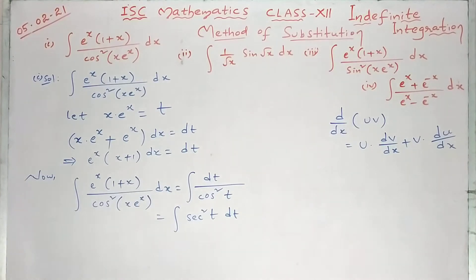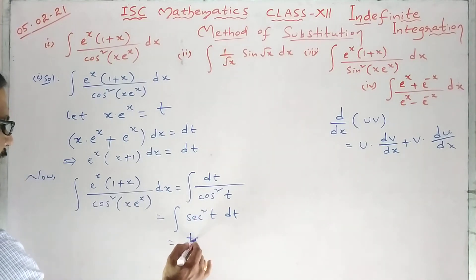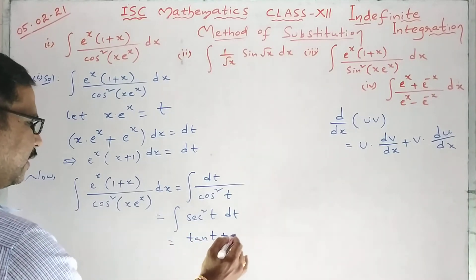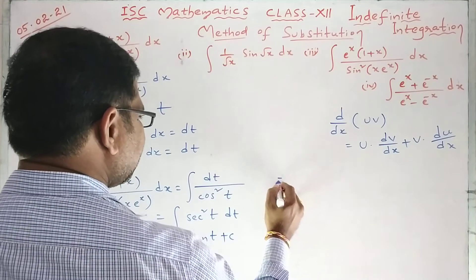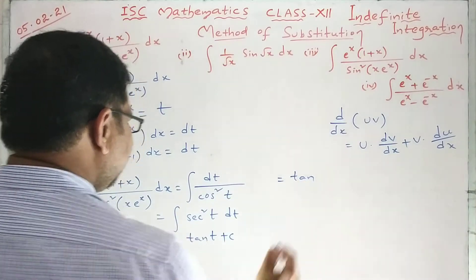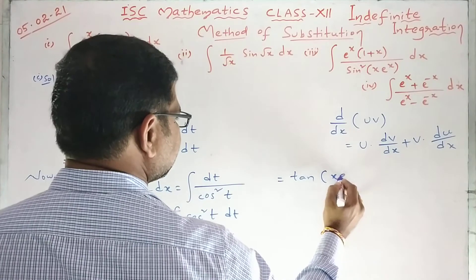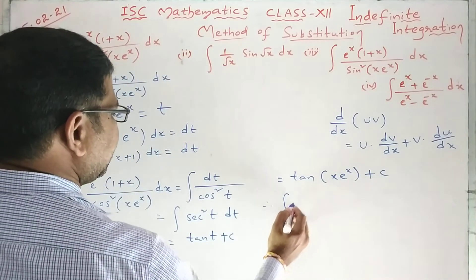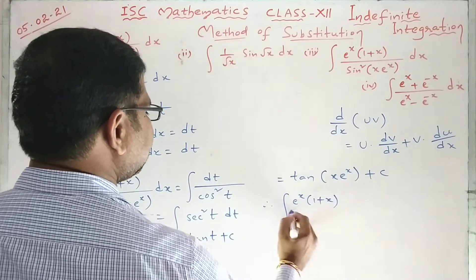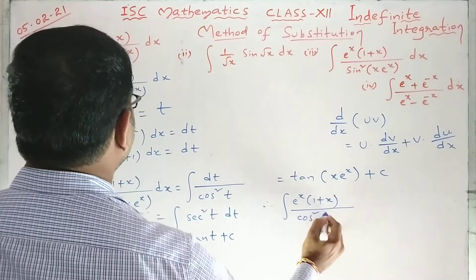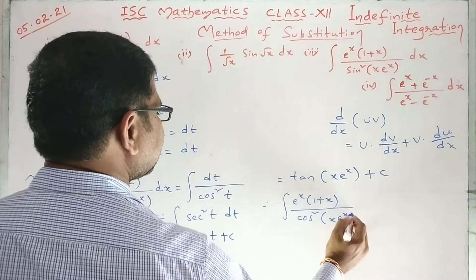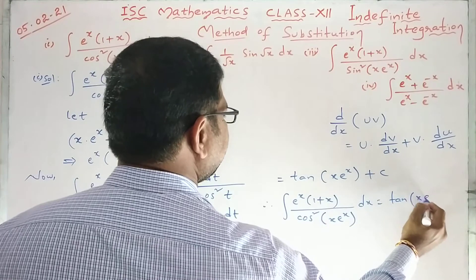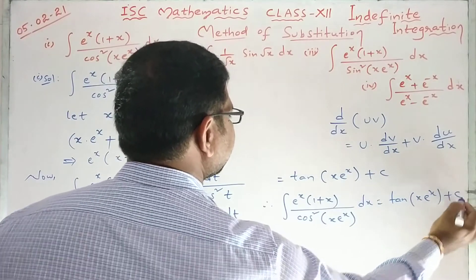What is the integration of secant squared of t? It is tan t, because the derivative of tan x is secant squared of x. Formulas you should know perfectly. So tan of t, and t here is x e^x, plus c. Therefore, the integral of e^x into (1 plus x) upon cos squared of (x e^x) dx equals tan of (x e^x) plus c.